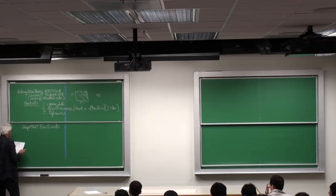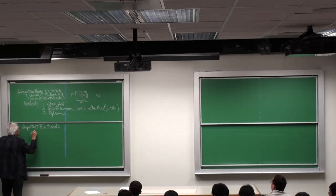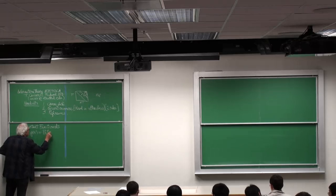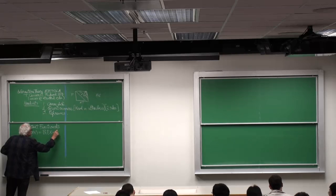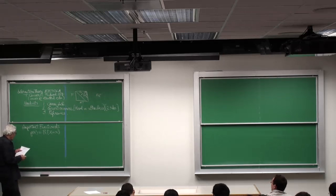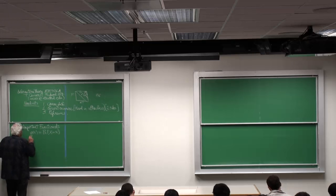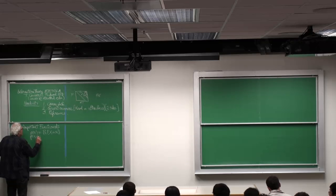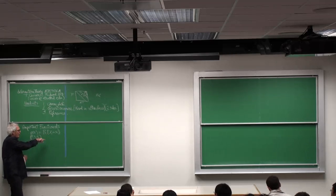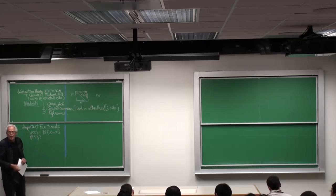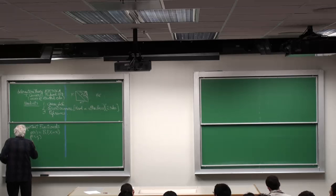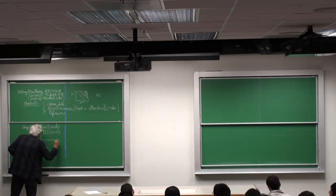The important functionals. I'll let p(x) be the probability that the random variable X is equal to little x. Little x. p(x,y) similarly is the probability that the pair X,Y equals little x, little y.